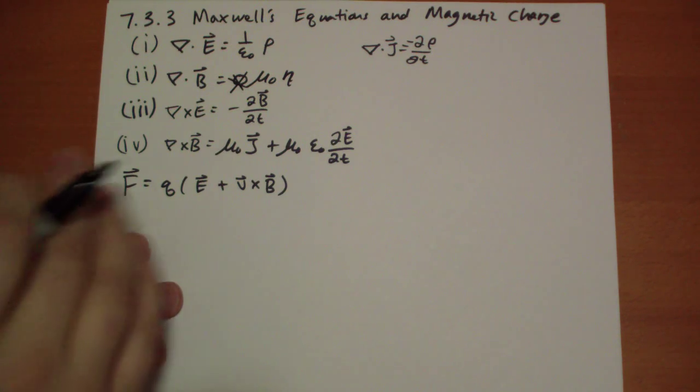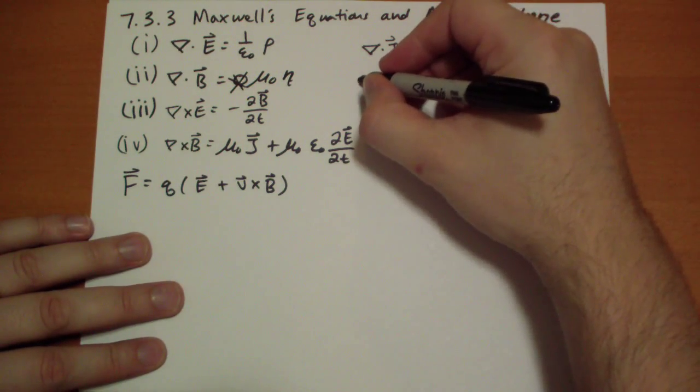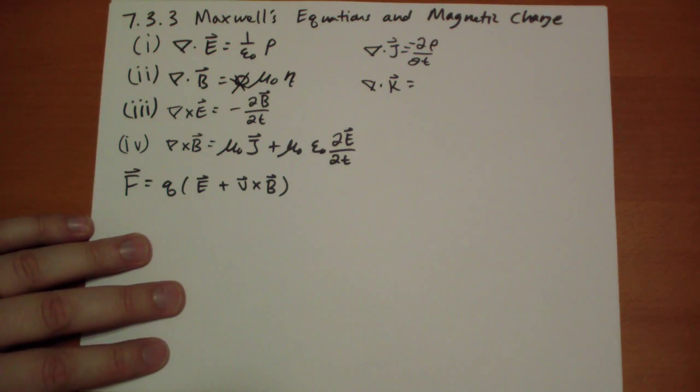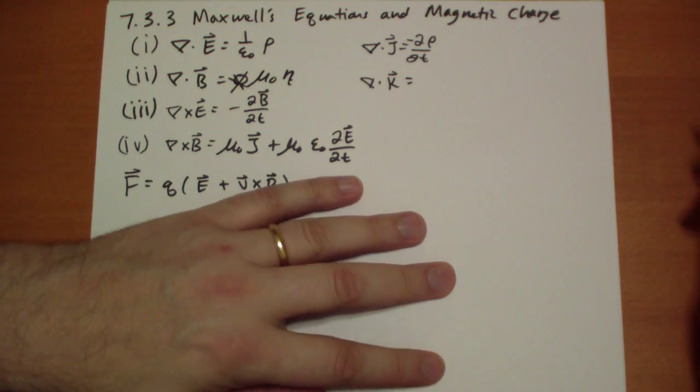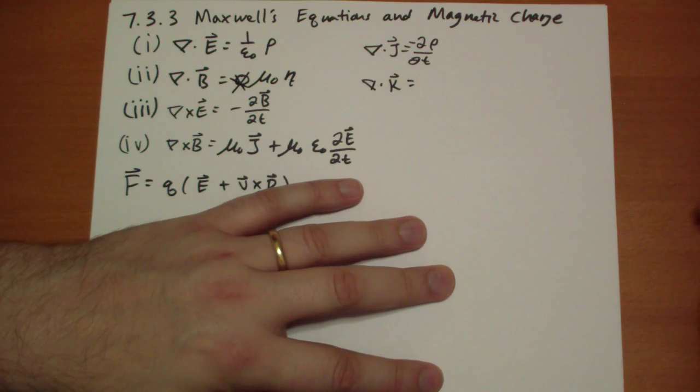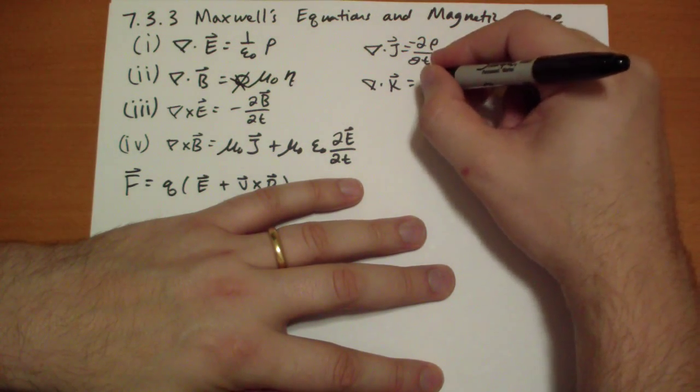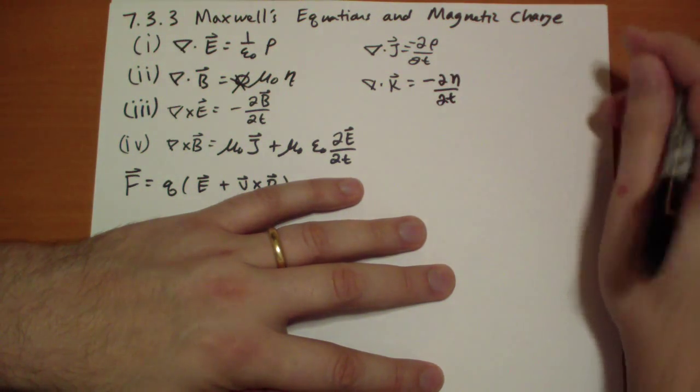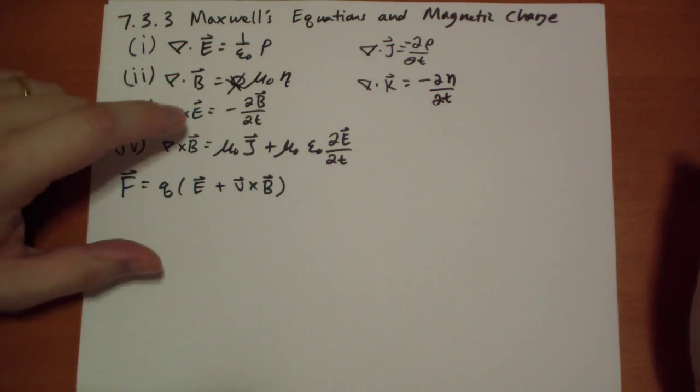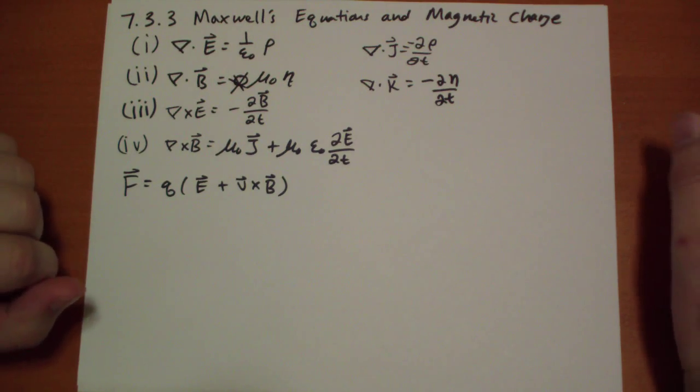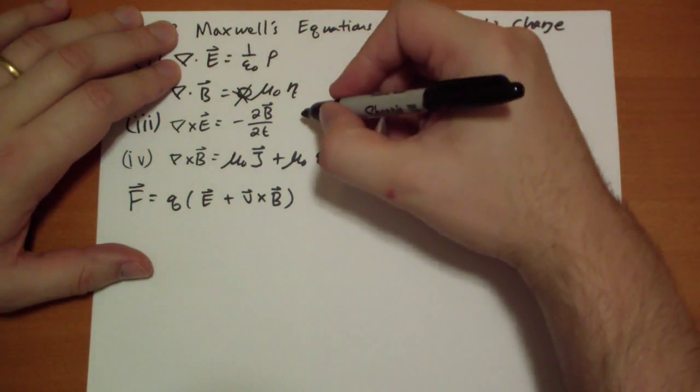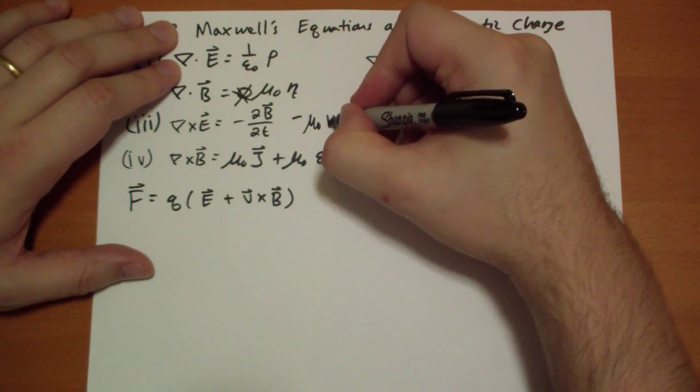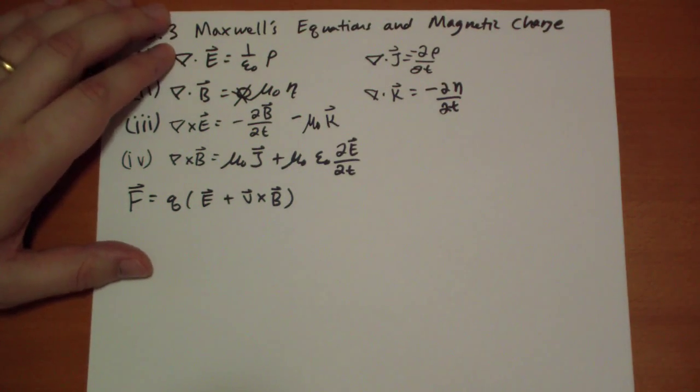And then for the continuity equation for this, we can introduce and say that the k, the current of the magnetic charge, is equal to minus the eta, the magnetic charge. And then so this term, now we needed a correction for the magnetic current, and that's just equal to minus mu not k vector.